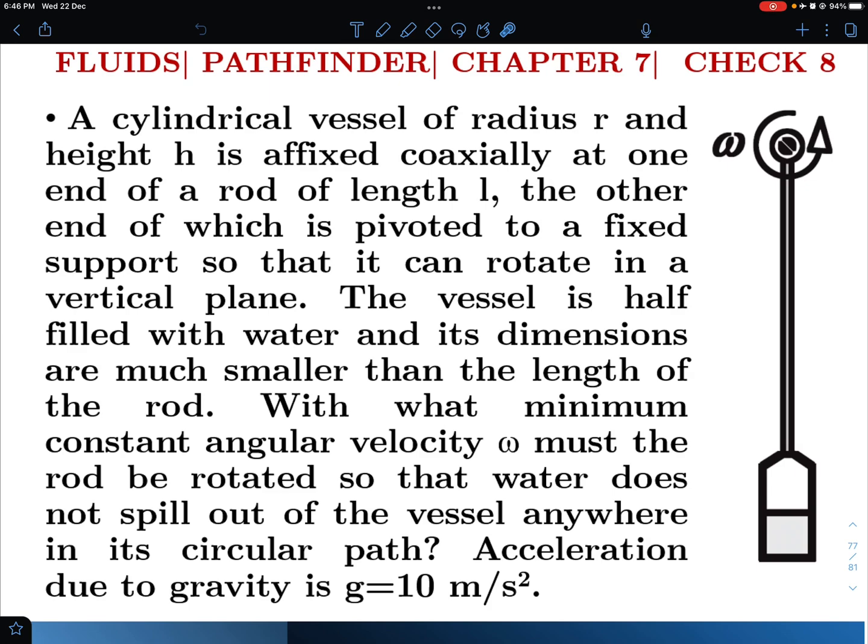Let's look at the problem. A cylindrical vessel of radius r and height h is affixed coaxially at one end of a rod of length L, the other end of which is pivoted to a fixed support so that it can rotate in a vertical plane.